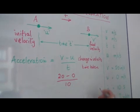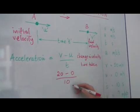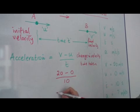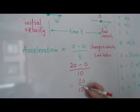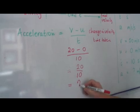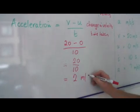Now, as we can see, it's quite simple. Twenty minus zero over ten is equal to twenty over ten, which is two meters per second.